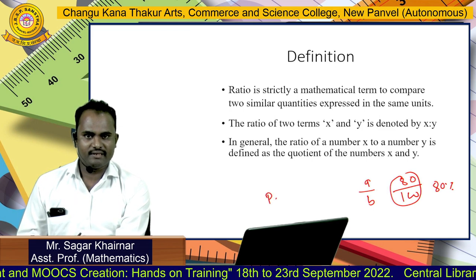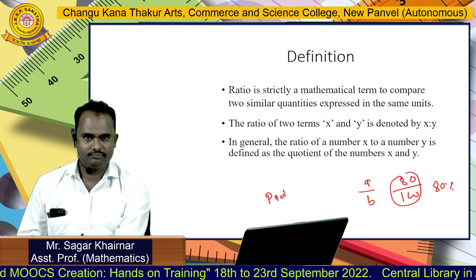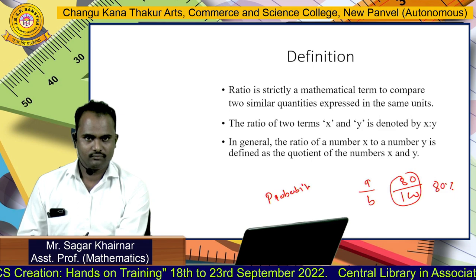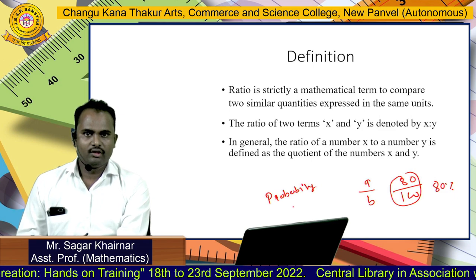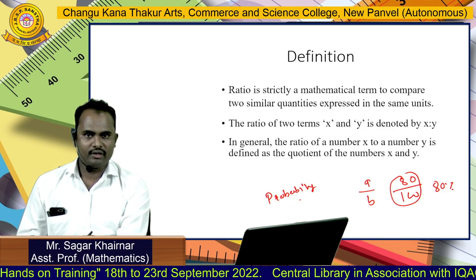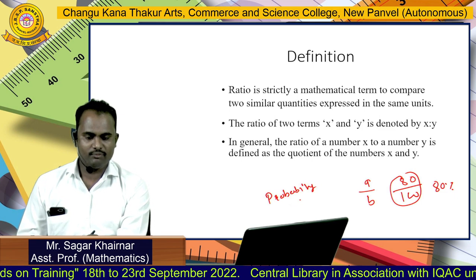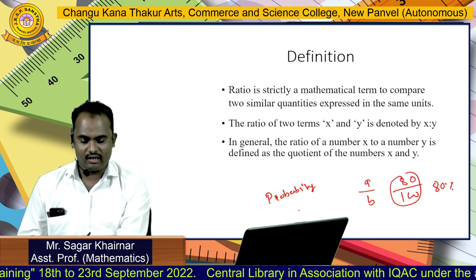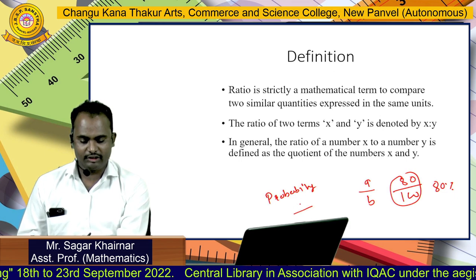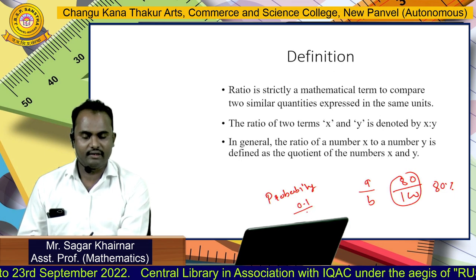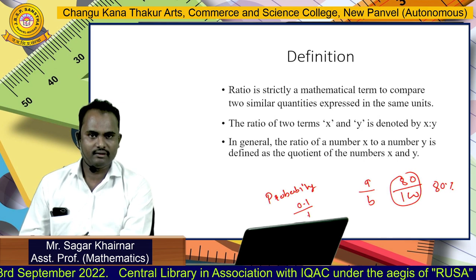The probability is the best example. The probability is always out of 1, so it is always written as the ratio as 0.1 divided by 1.